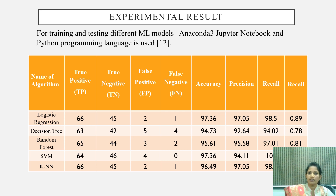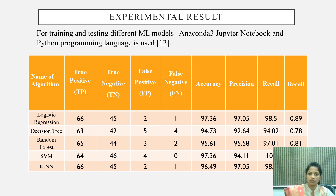For training and testing the different ML models, we used Anaconda 3 and Jupyter Notebook, and for coding we used the Python language. From this experiment, we found that logistic regression achieved accuracy of 97.36%, precision 97.05%, recall 98.5%, and R2 0.89%. For decision tree, we got accuracy 94.73%, precision 92.64%, and recall 94.02%. For random forest, we got accuracy 95.61%. For support vector machine, we got accuracy 97.36%, and for k-nearest neighbor, we got accuracy 96.49%.